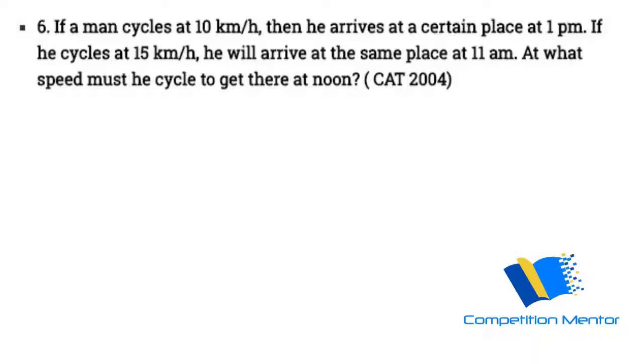So this is a CAT 2004 question. If a man cycles at 10 km per hour, then he arrives at a certain place at 1 pm. If he cycles at 15 km per hour, he will arrive at the same place at 11 am. At what speed must he cycle to get there at noon?